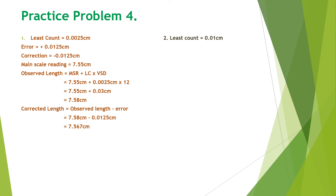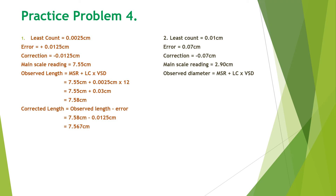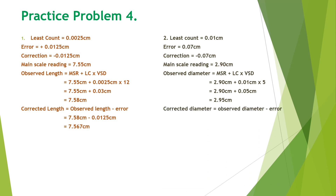Practice problem four, second part: least count is 0.01 centimeter, and error is positive 0.07 centimeter, so correction is negative 0.07 centimeter. Main scale reading is 2.90 centimeter. Observed diameter is main scale reading plus least count into vernier scale division: 2.90 plus 0.01 times 5 equals 2.90 plus 0.05, which is 2.95 centimeter.